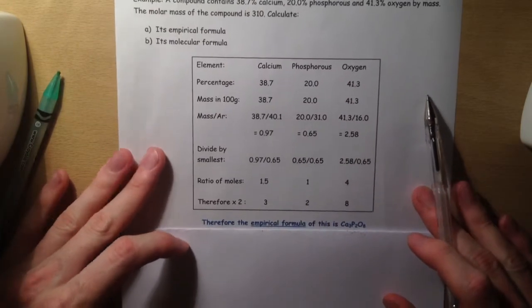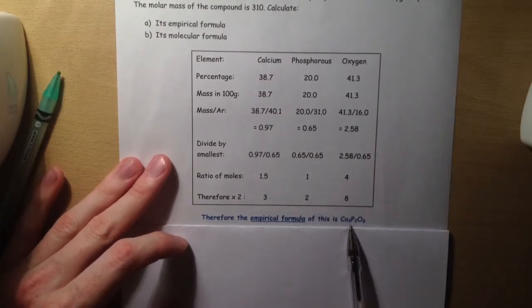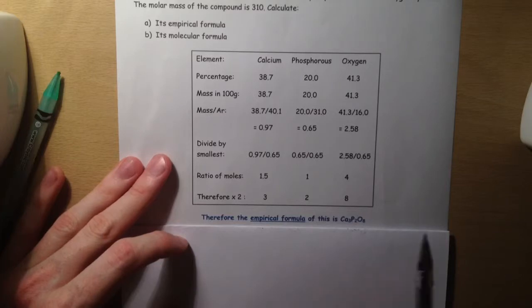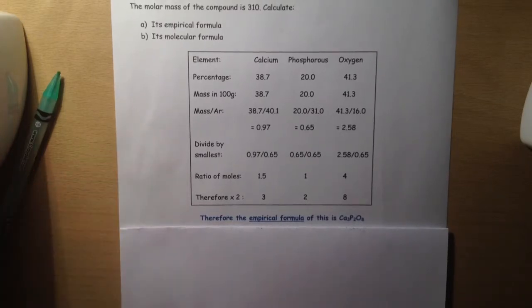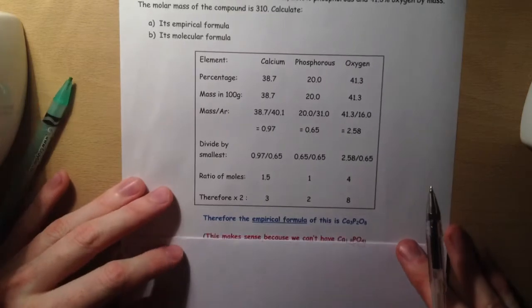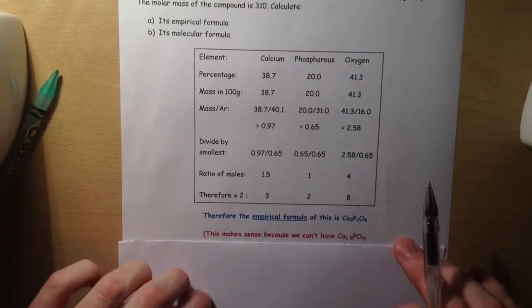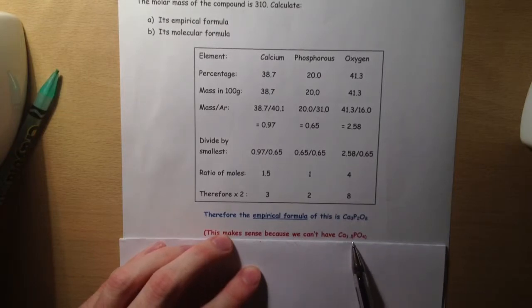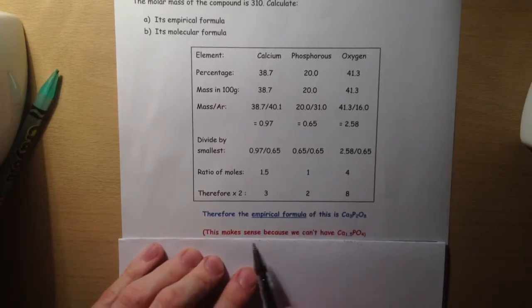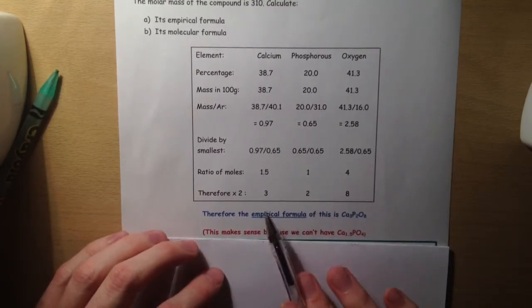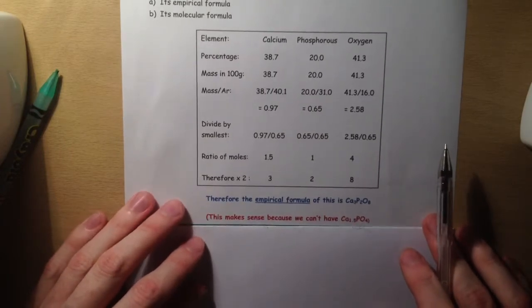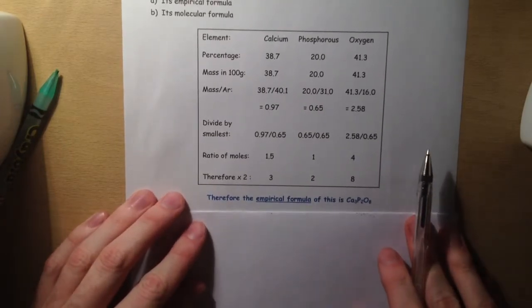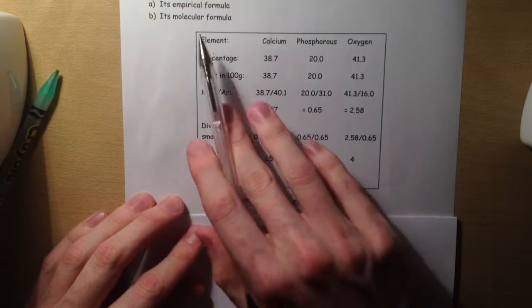Therefore, our empirical formula for this is Ca3P2O8. The reason that we can't have 1.5 is because we would have Ca1.5PO4. We obviously cannot have 1.5 there, so we need to get rid of that by multiplying all these up by two. That's our empirical formula sorted.